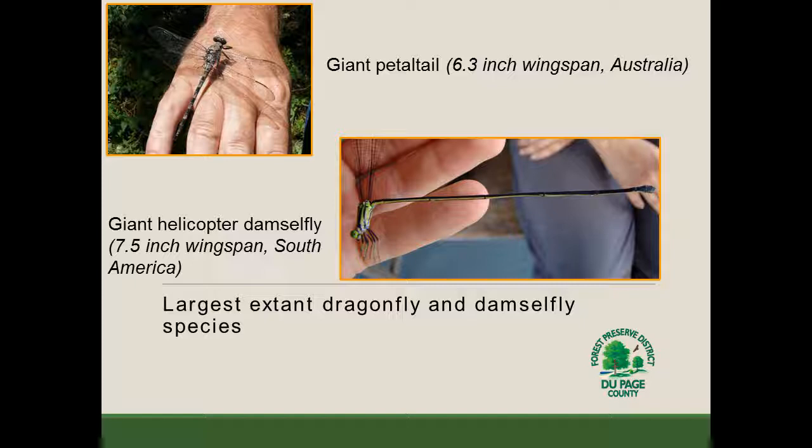Nowadays, we don't have any species that large, though we do still have some fairly large dragonfly and damselfly species. Currently, the largest dragonfly species known is the giant petaltail with a 6.3 inch wingspan, and we find those in Australia. The largest odonate in the world is the giant helicopter damselfly with a 7.5 inch wingspan, found primarily in Central and South America.